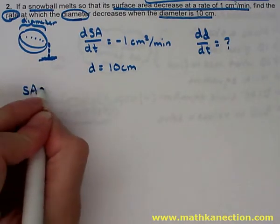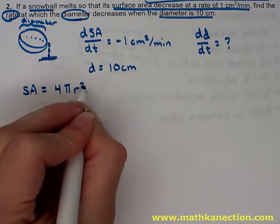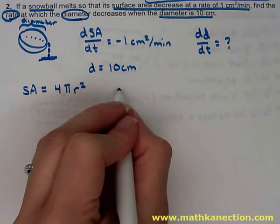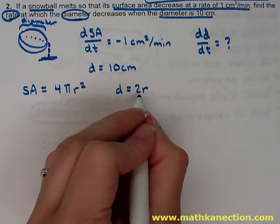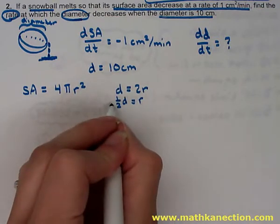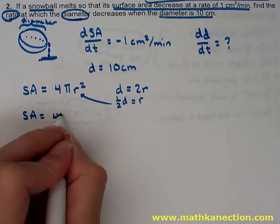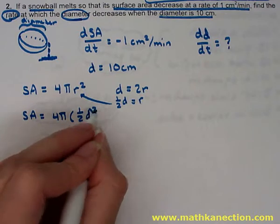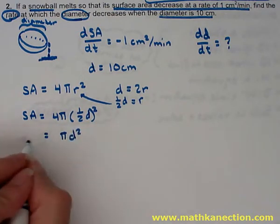The equation we'll need is surface area for a sphere: 4πr². Since the problem uses diameter rather than radius, we replace r with one-half diameter in the surface area formula. So surface area equals 4π times (½D)², which simplifies to π times diameter squared.